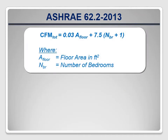ASHRAE 62.2 2013 includes an equation for CFM total, and it's based on the floor area of the dwelling and the number of bedrooms. The total desired ventilation rate is equal to 3 CFM for every 100 square feet of floor area plus 7.5 CFM for each occupant, assuming that there are two occupants in the master bedroom and one in each other bedroom. It'd be better to use the actual number of occupants, but for new construction that may not be known until after the house is built and put on the market.